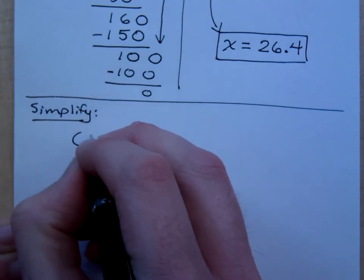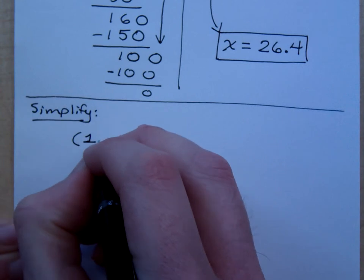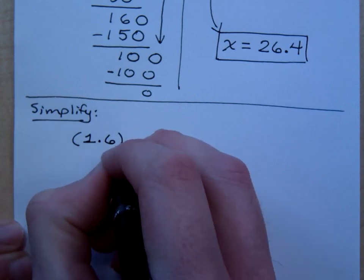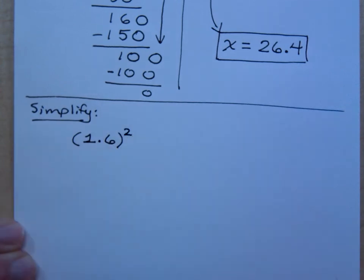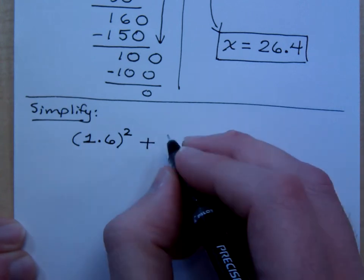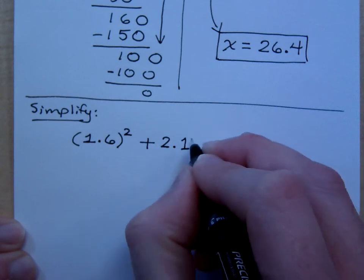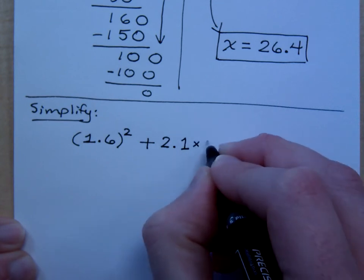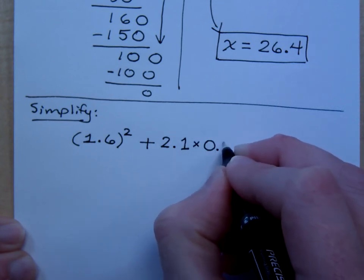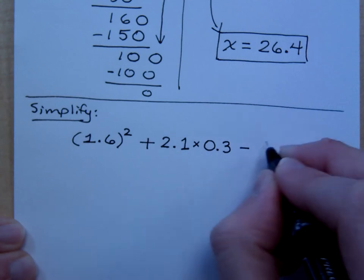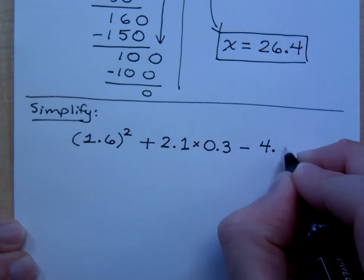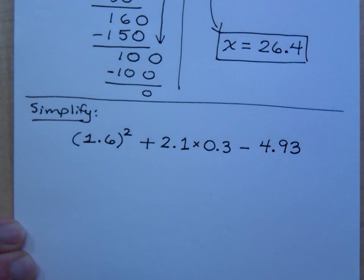So if I give you this: 1.6 squared plus 2.1 times 0.3 minus 4.93. Oh, you're evil! You feel some evil.